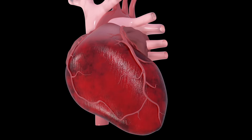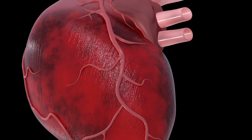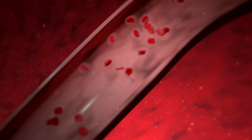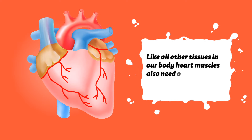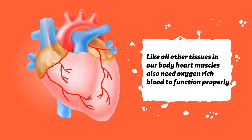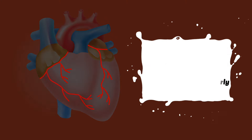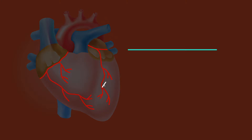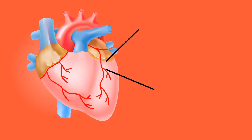A heart attack occurs when the flow of blood to the heart is severely reduced or blocked. Like all other tissues in our body, heart muscles also need oxygen-rich blood to function properly. The arteries wrapping around the heart are called coronary arteries, which supply the oxygen-rich blood to the heart.